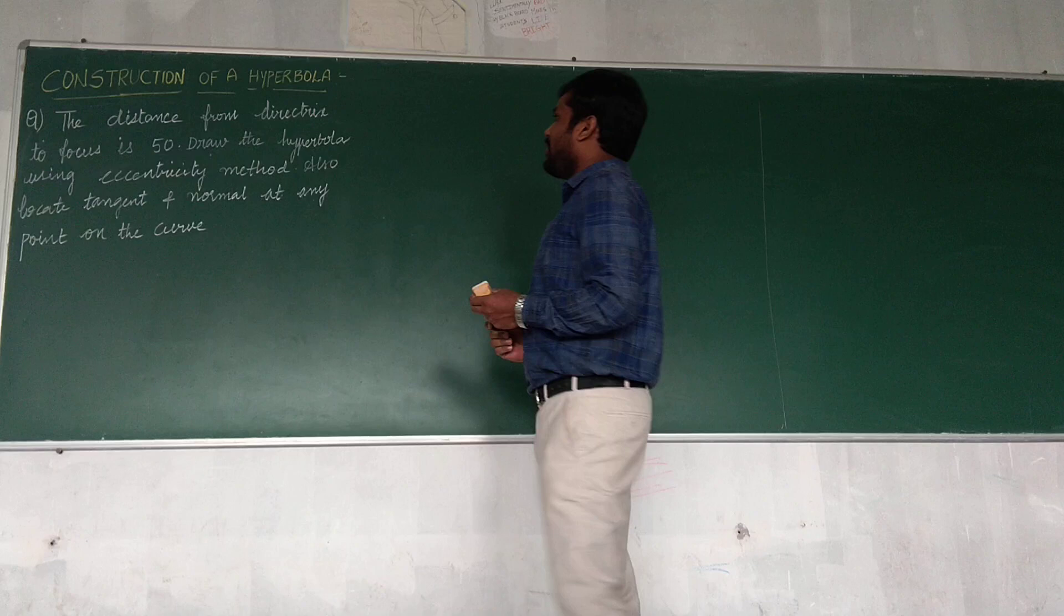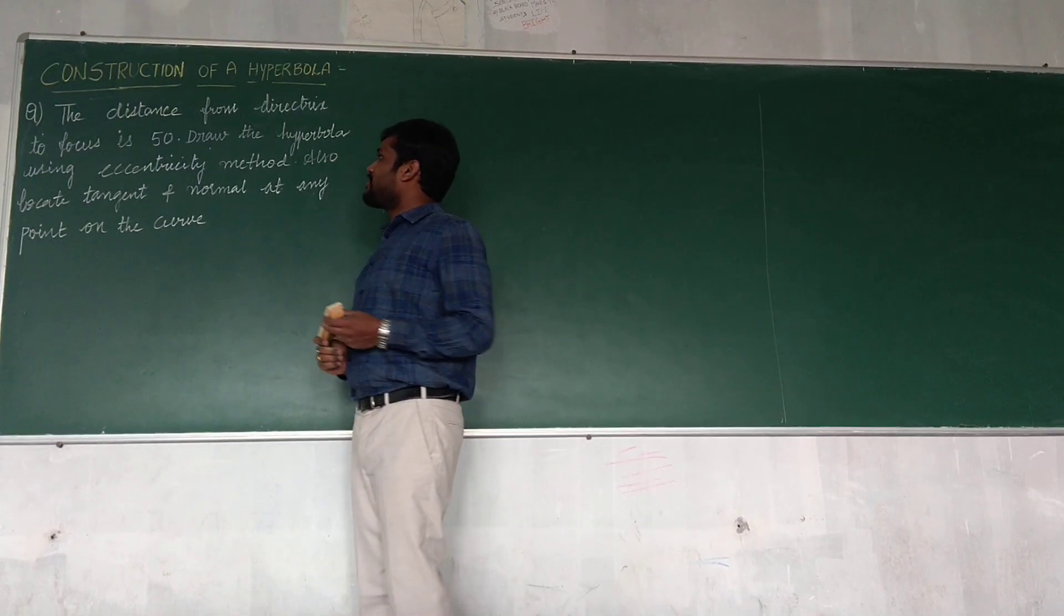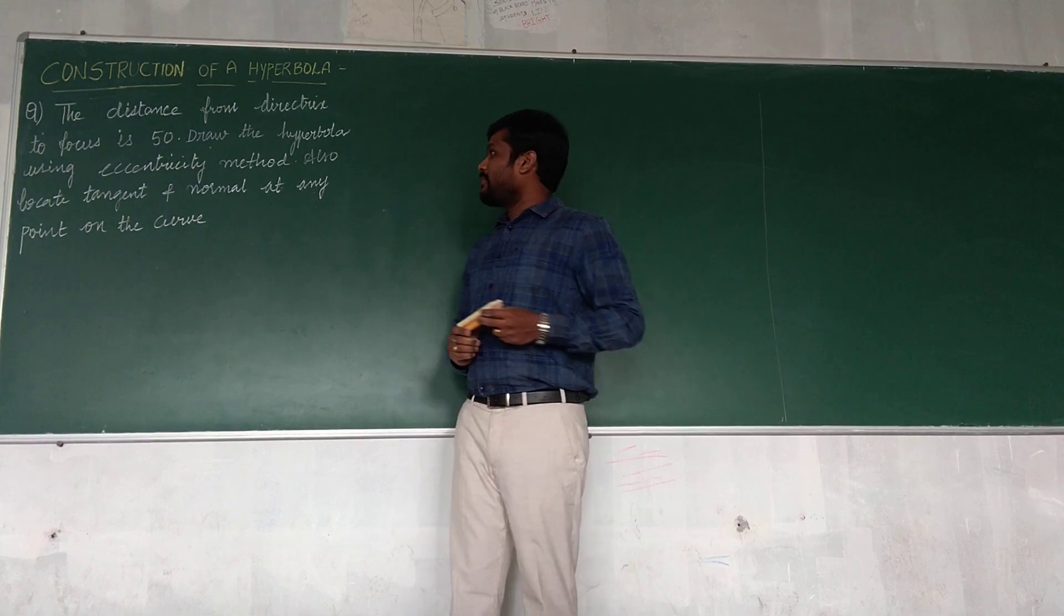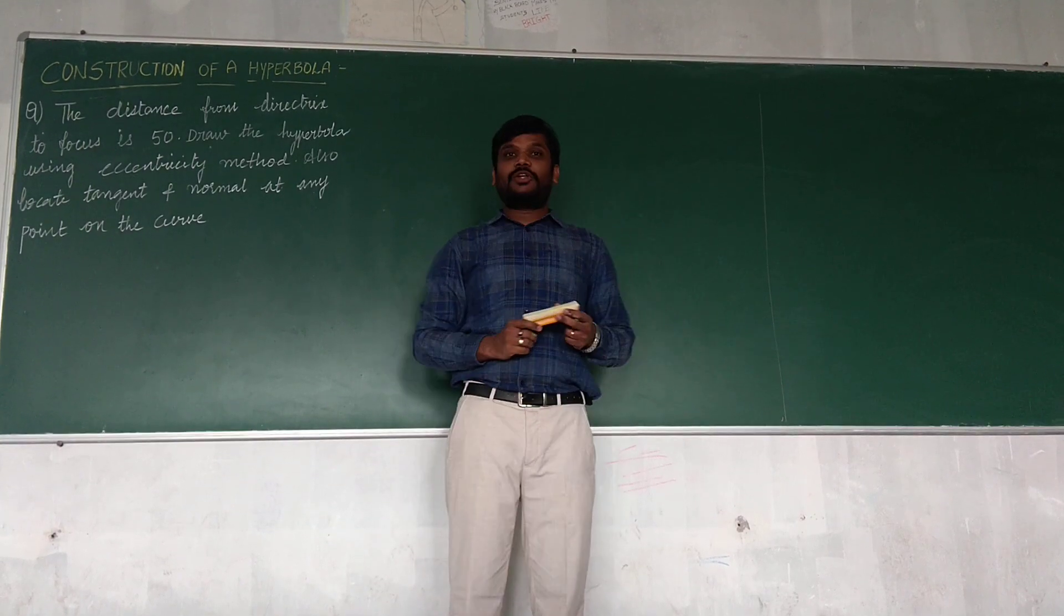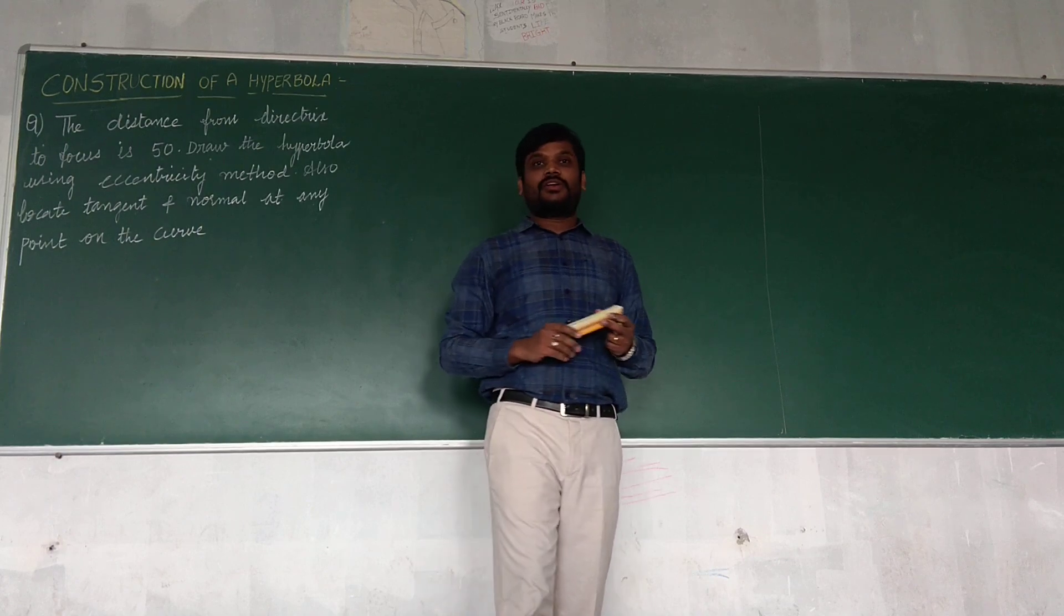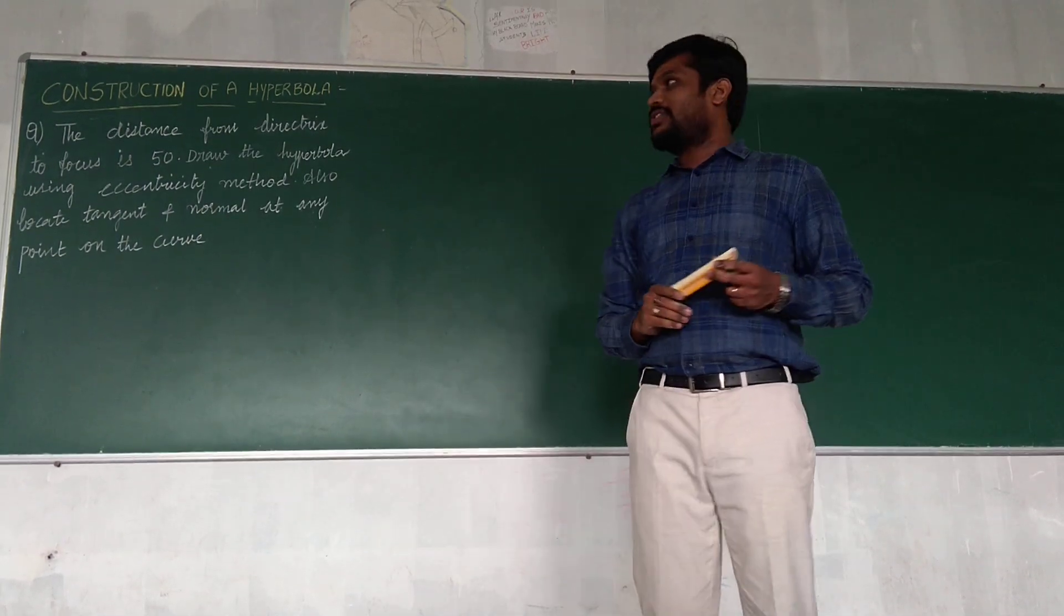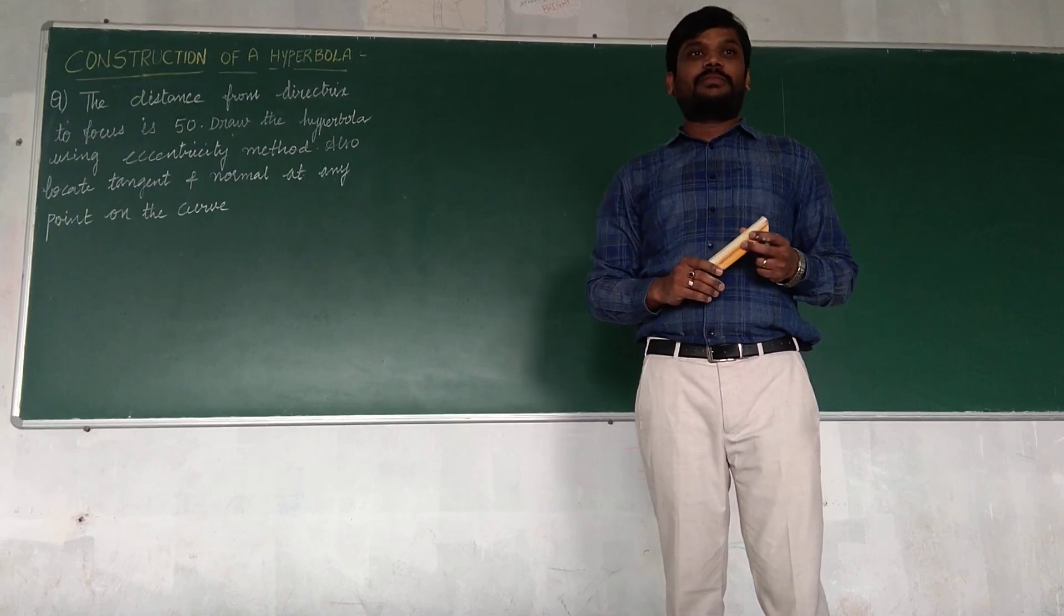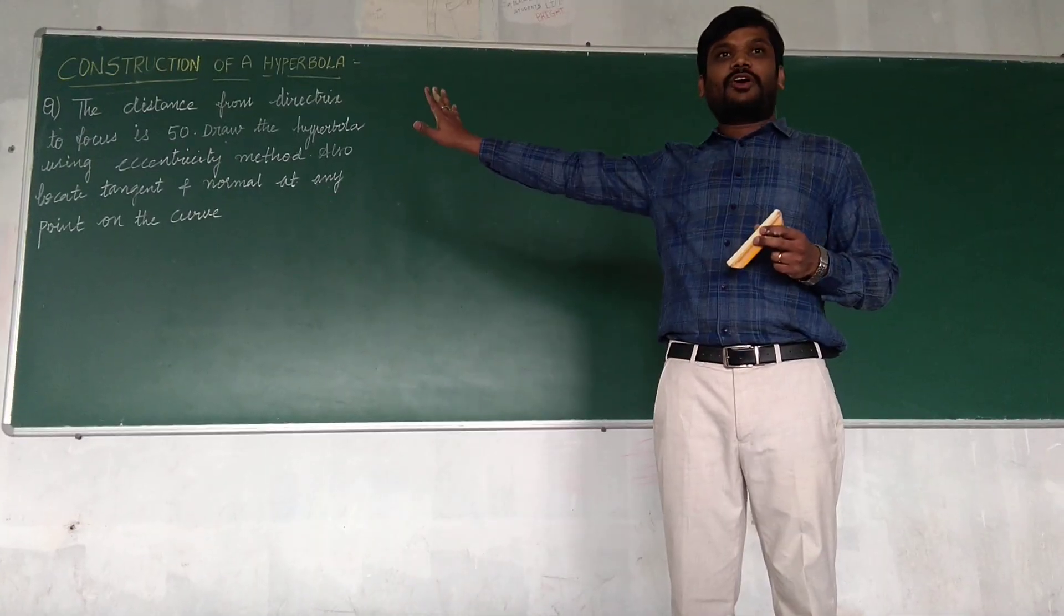Now let's look into the problem. The distance from directrix to focus is 50. Draw the hyperbola using eccentricity method, and also locate tangent and normal at any point on the curve. By looking at the question, it is very easy to understand it is of eccentricity method, which is directly given in the problem.